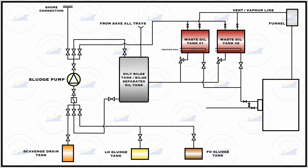Even if a fine droplet gets carried away in the line, it would be caught by the mesh-like or demister-like arrangement present in the funnel area in the mist box section. Once the sludge is free of water content and ready to be incinerated, by lining up the discharge valve of the waste oil tank and the inlet to the incinerator, we align the selected tank to burn in the incinerator. Diesel oil is also used for the initial ignition of the pilot burner, which sustains further ignition of the waste oil.